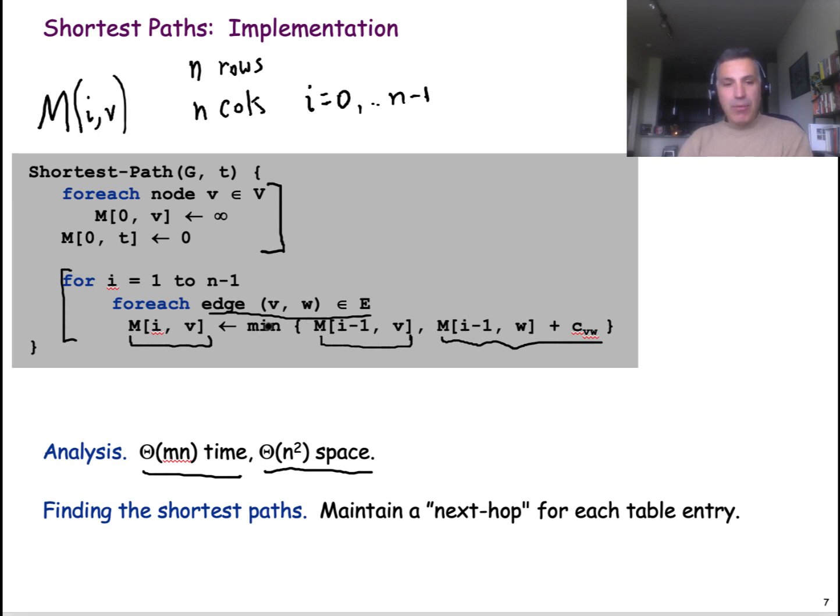Now, if we also need to keep track of the actual shortest path, not only the cost of the shortest path, but actually the path itself, then together with each of these entries in the table, we have to record also the next hop.